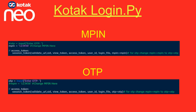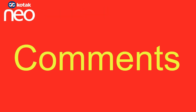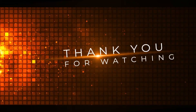You can then run the script from an IDE or by double-clicking it. If you want to use an access token instead of a consumer key and secret, use the Kotak Login AT script. Replace your credentials within the quotes and change the file path for the login file variable if needed. If you have any doubts, feel free to post them in the comments. Thank you for watching.